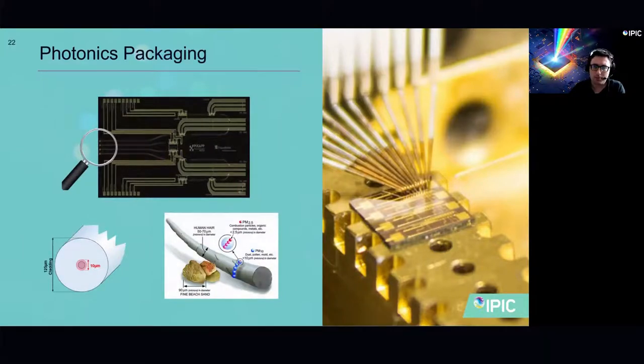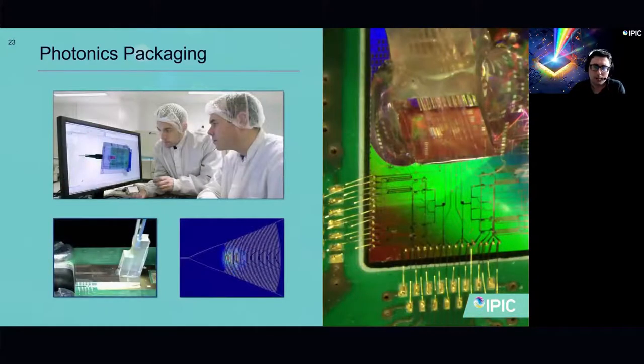One of the main challenges with using these photonic integrated circuits is actually how we get light in and out of them. Typically, this is done by aligning an optical fiber to part of the chip that guides the light, and this is called the waveguide. Now the waveguide is extremely small. Typically, it's less than 10 microns in diameter. This is about five times smaller than the thickness of a human hair, which is a diameter of about 16 microns. So we really need advanced processes and technologies to actually get the light in and out of these photonic integrated circuits.